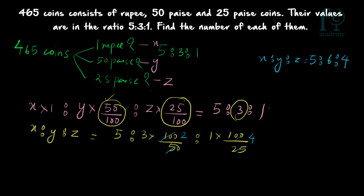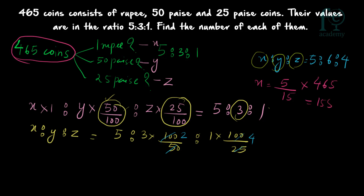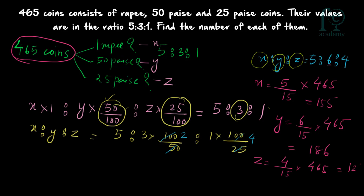The ratio of the number of coins is x:y:z = 5:6:4. The total number of coins is 465. So x = (5/15)×465 = 155, y = (6/15)×465 = 186, and z = (4/15)×465 = 124. These are the number of 1 rupee, 50 paise, and 25 paise coins respectively.